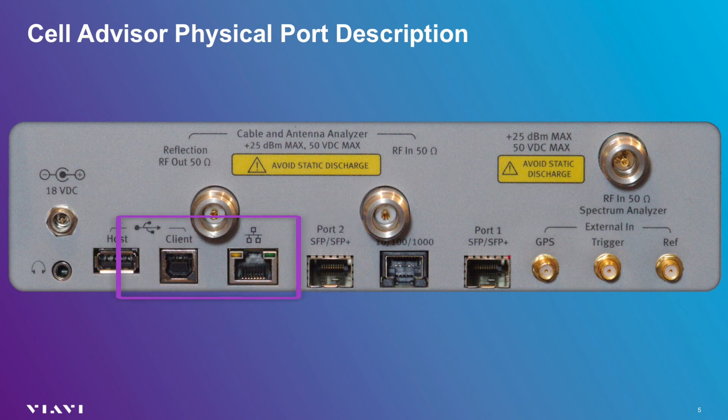The JD740 and JD780 Cell Advisors also have industry standard USB and Ethernet ports. The USB port may be used for a variety of devices, including flash memory sticks, a Wi-Fi adapter, or the P5000i fiber inspection scope. The USB client port is used to directly connect a PC; however, the network port just to the right of the USB client port is generally used for this purpose. When connected to one of these ports, a PC can be used to remotely control the unit, collect a measurement, or transfer files.